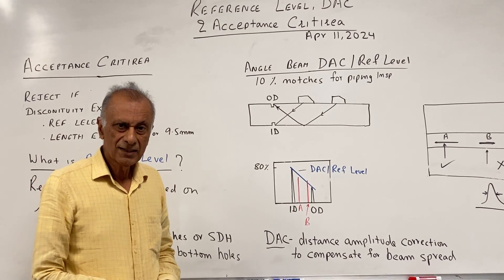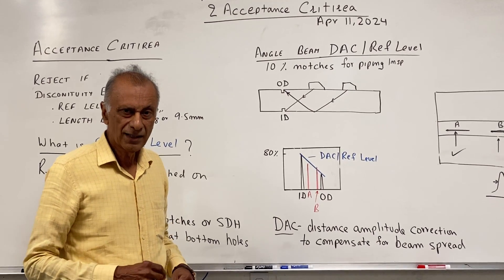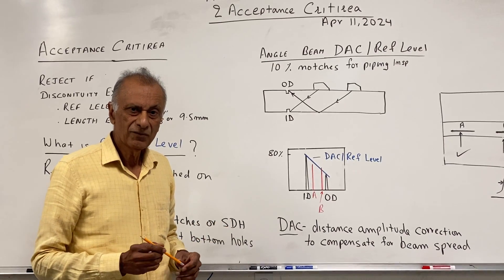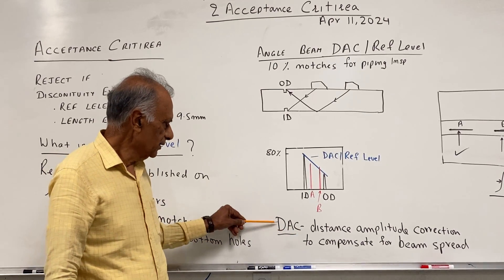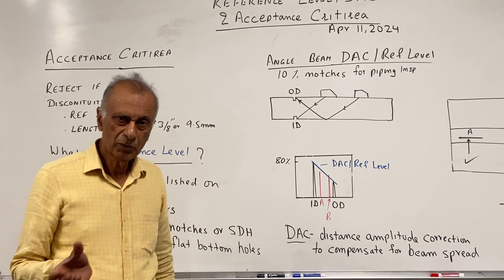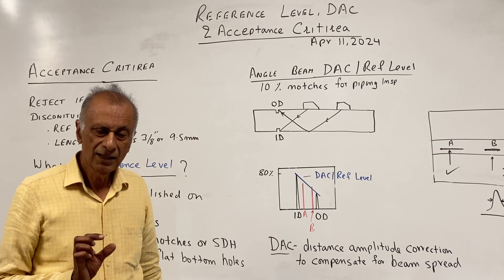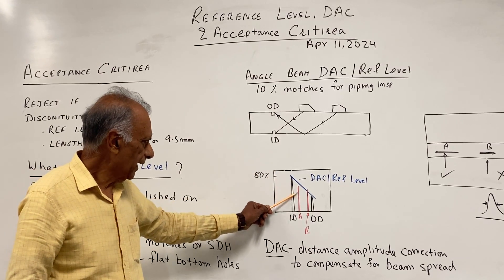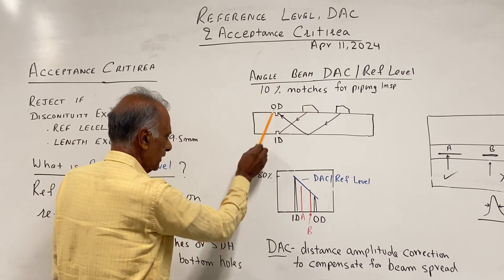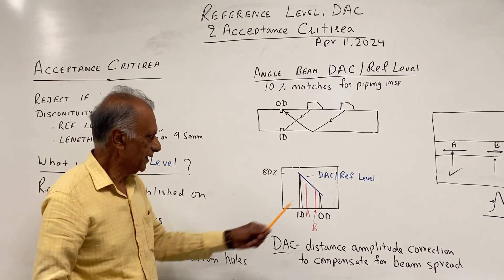Now what is the Distance Amplitude Correction curve? It compensates for the beam spread of the ultrasonic probe. The ultrasonic probe is not like a laser beam — you will not get the same amplitude for all sound paths. As the sound path increases, the beam spread increases, and with the increase in beam spread the amplitude will drop. So we have to compensate for that. The beam spread will change from probe to probe: if you are using a small probe the beam spread will be higher; if you are using a lower frequency the beam spread will also be higher, and the drop in the DAC will be higher. This DAC, established on the reference reflectors — the 10% ID notch and the OD notch — becomes our reference level.